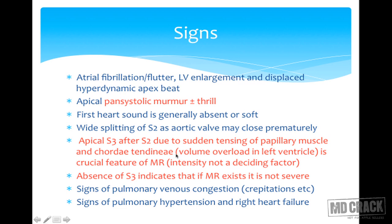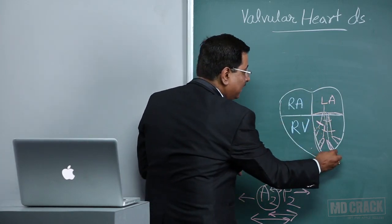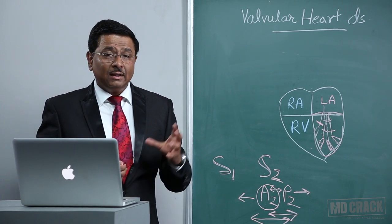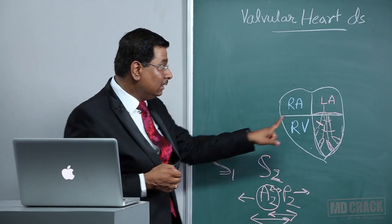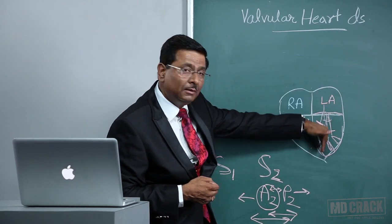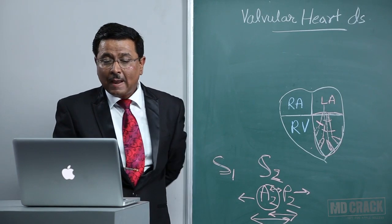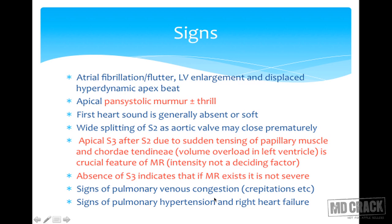Apical S3 after S2 is due to sudden tensing of the papillary muscles and chordae tendineae from volume overload in the left ventricle — this is a crucial feature of mitral regurgitation. However, the intensity of S3 does not correlate with the severity of regurgitation; it is the length of the systolic murmur that indicates severity. Absence of S3 suggests the mitral regurgitation is not severe. There will also be signs of pulmonary venous congestion, pulmonary hypertension, and right-sided heart failure.